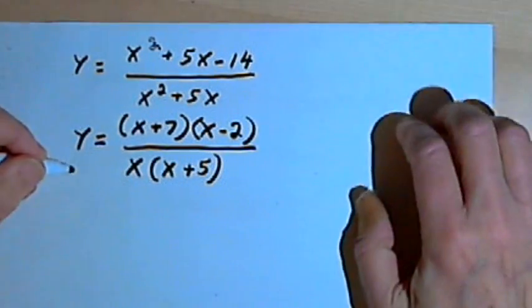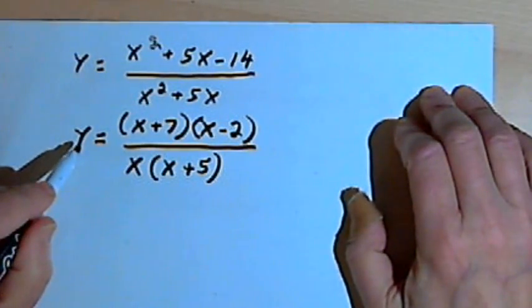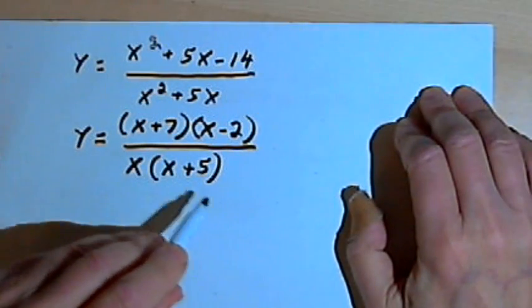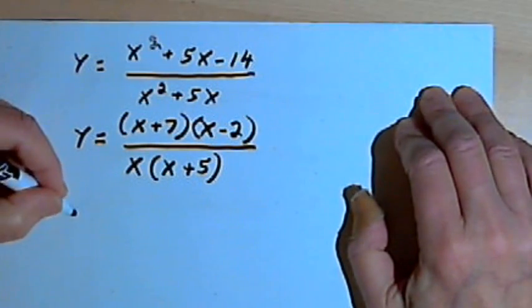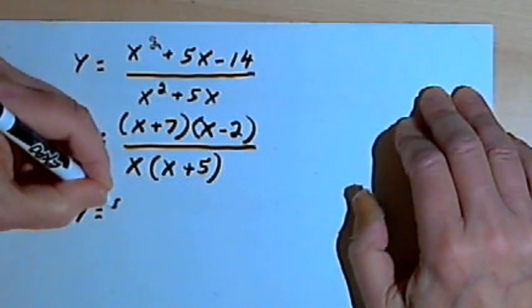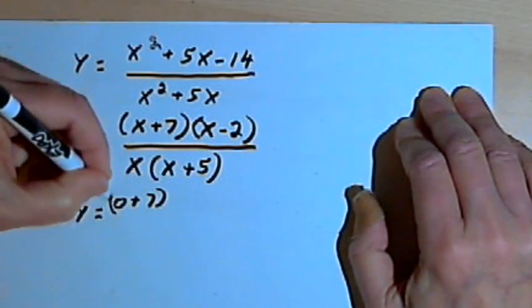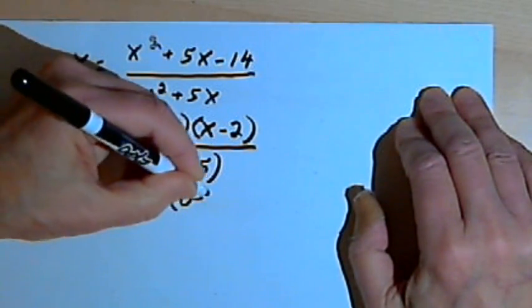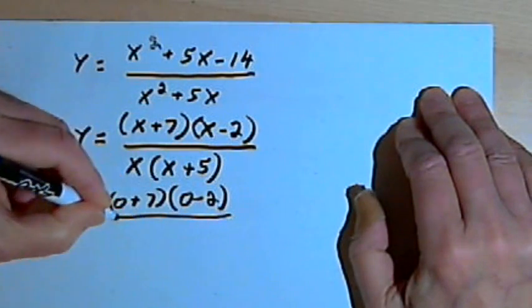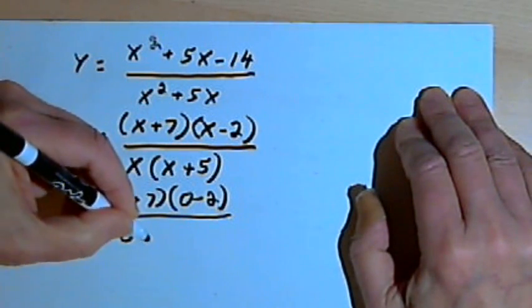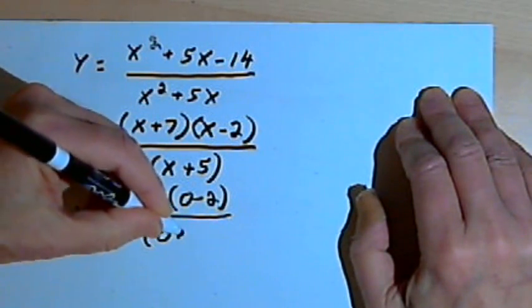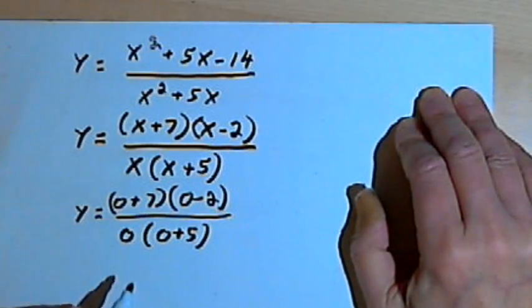To find the y-intercept, I want to turn the x's into zeros. So I would have y equals 0 plus 7 times 0 minus 2. The denominator is going to be 0 times 0 plus 5.